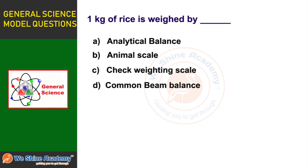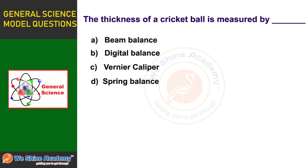The next question involves identifying the correct measuring instrument. Option D: common beam balance. Option C: digital balance. Option C: Vernier caliper, Option D: spring balance. The answer is Option C: Vernier caliper.